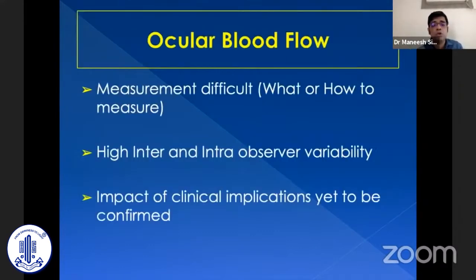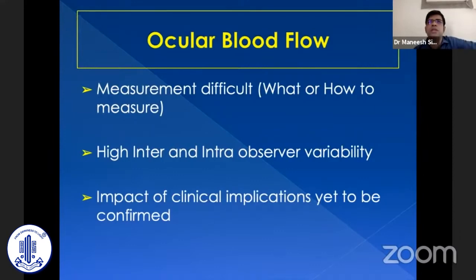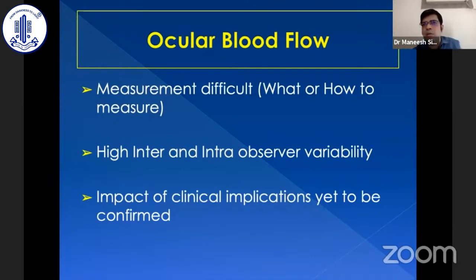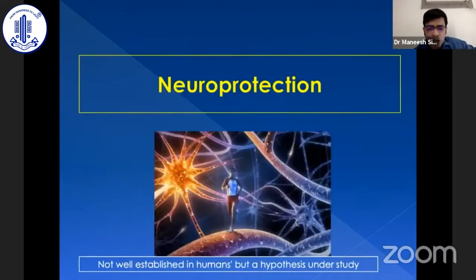Regarding ocular blood flow: currently we don't have a proper tool to measure it reliably. It's unclear whether to measure central retinal artery flow, posterior ciliary arteries, or ophthalmic artery, and none of the tools have good predictability — there is high inter- and intra-observer variability. It is also difficult to quantify the clinical impact of blood flow measurements. However, in normal tension glaucoma patients with disc hemorrhages, you can assume an ischemic factor is playing a role, and using a carbonic anhydrase inhibitor as adjunct to prostaglandin can be a better option.